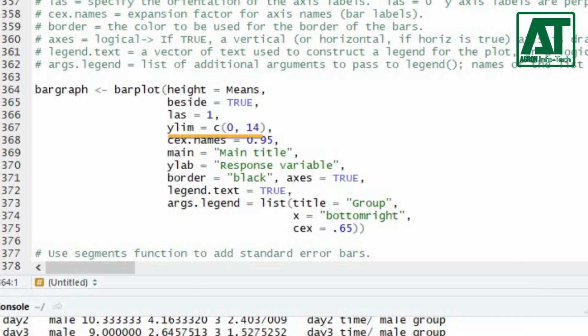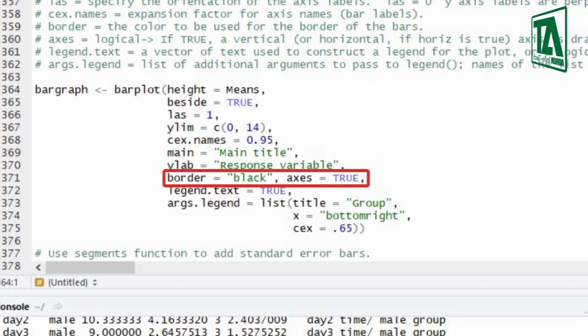In Y limit specify value used to show the length of Y axis. Cex.names represents expansion factor for axis names. In main argument you can type title. In ylab argument type the text to represent the response variable. Border argument specifies the color to be used for the borders of the bars. For axis, true value will plot vertical bars while false value will result in horizontal bars.